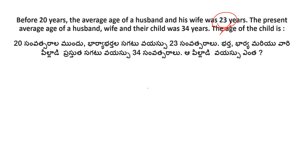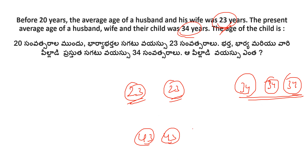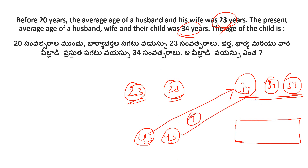The average of husband and wife 20 years ago was 23. Their present average is 43. Since the present average of the three (husband, wife, child) is 34, we get 3 times 34 equals 102 total. The husband and wife contribute 86, so 43 times 2 minus total gives child's age as 9.